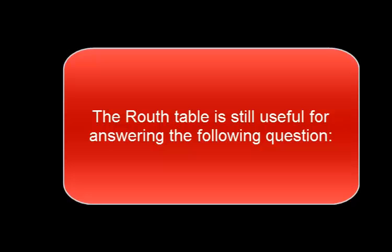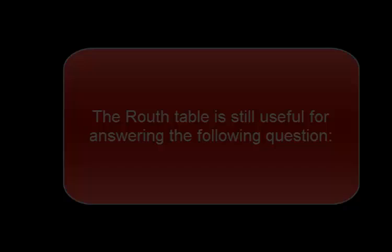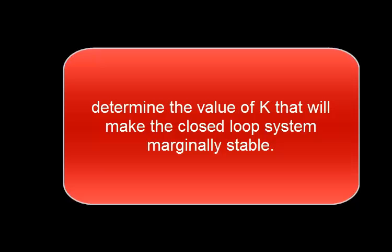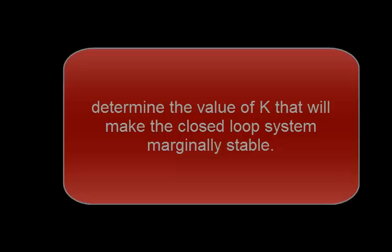The Routh table is still useful for answering the following question. Given some closed loop system with an unknown parameter K, determine the value of K that will make the closed loop system marginally stable. This is a critical value of K.